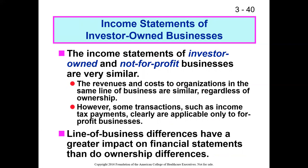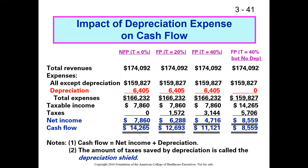The income statements for investor-owned and not-for-profit businesses are very similar — probably a 99% overlap. Some differences are just terminology, but there are some significant differences in the way things are reported. Revenues and costs line up very similarly regardless of how organizations are owned. However, income taxes only apply to for-profit businesses — not-for-profits don't pay income taxes — and that can have a significant impact on profitability.